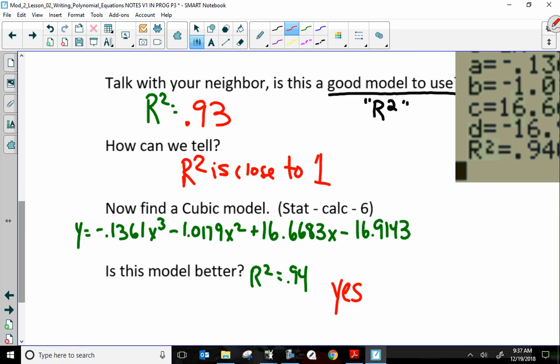How come the cubic is better? Because its r squared is closer to 1 than the quadratics are squared. If you want to say, you can say 0.94 is bigger than 0.93. But the way I would write it is 0.94 is closer to 1 than 0.93. They're both good models, but the cubic happens to be a better fit.